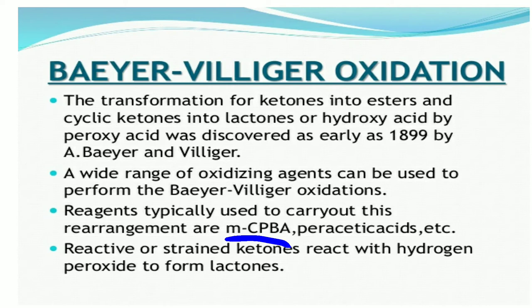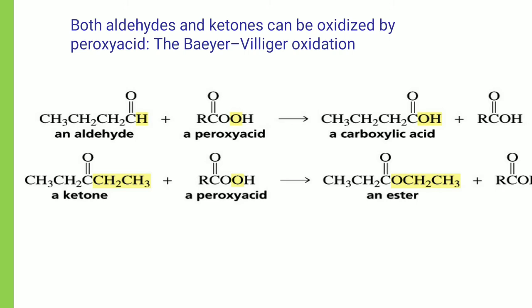The strained ketone reacts with hydrogen peroxide to form a lactone. In the Baeyer-Villiger reaction, an aldehyde or ketone reacts with a per acid — that is a percarboxylic acid. It gets converted to a carboxylic acid or carboxylic ester. If an aldehyde is present, reaction with the per acid gives a carboxylic acid. When a ketone reacts with a peroxy acid, it gets converted to an ester.